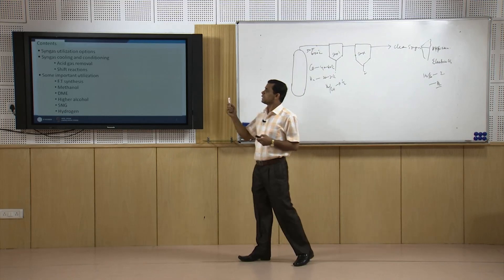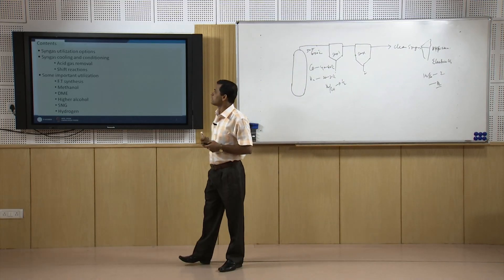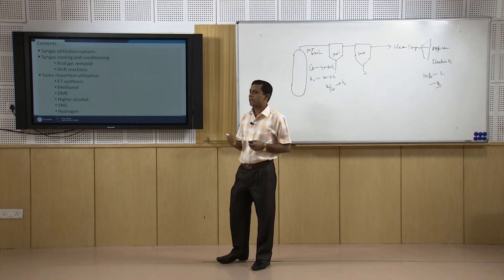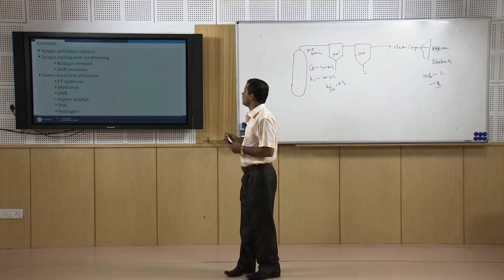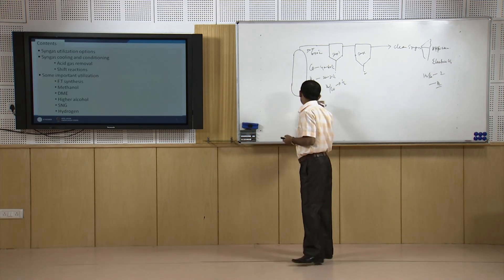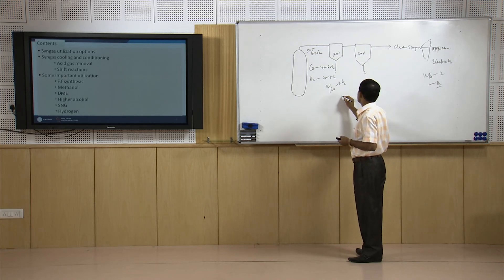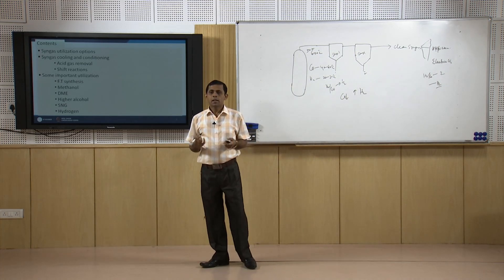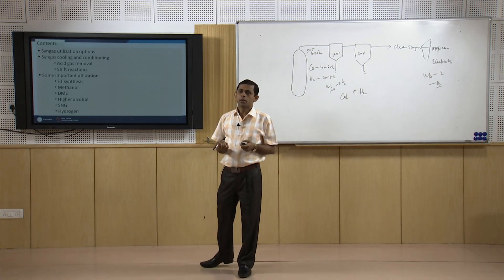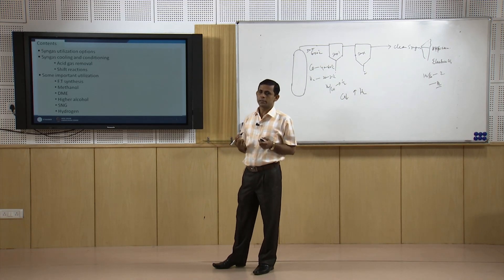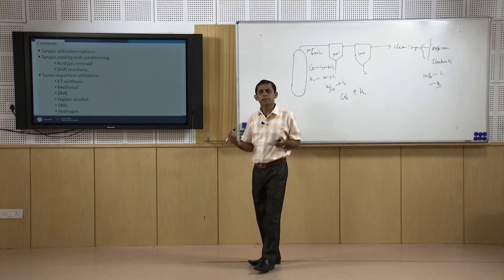In this module we will discuss syngas utilization options, syngas cooling and conditioning — which includes acid gas removal and shift reactions. Shift reactions will increase the hydrogen concentration and reduce CO concentration in the syngas. Then we will discuss processes for the production of some chemicals or other utilities like electricity.